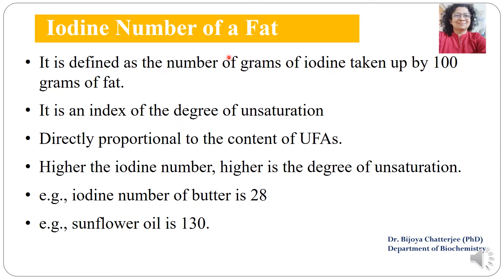The iodine number of a fat is defined as the number of grams of iodine taken up by 100 grams of fat. It is an index of the degree of unsaturation and is directly proportional to the unsaturated fatty acid content. Higher the iodine number, greater is the degree of unsaturation. For example, if the iodine number of butter is 28 and that of sunflower oil is 130, sunflower oil obviously has greater unsaturation.